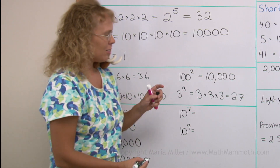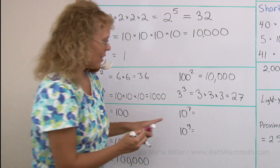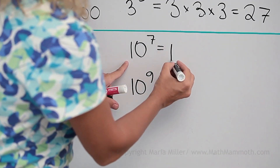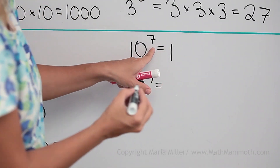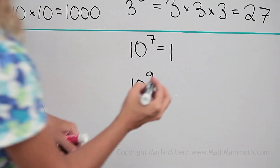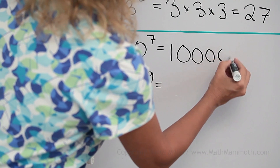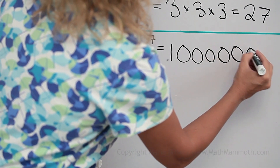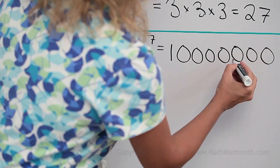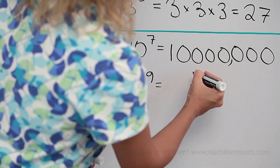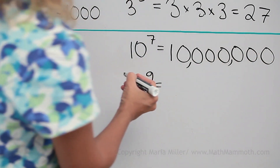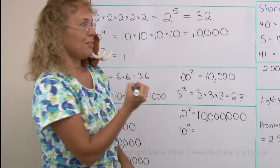10 to the seventh power is 1 followed by 7 zeros. Counting them out: 1, 2, 3, 4, 5, 6, 7. Adding commas, it is 10 million.